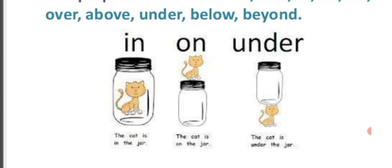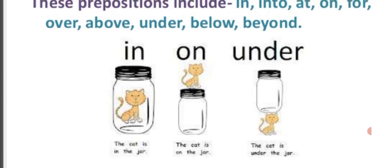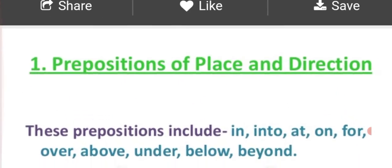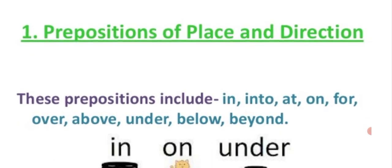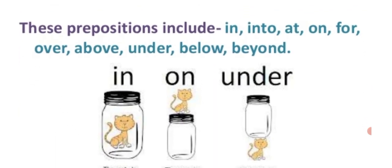We will use the preposition 'on' in the appropriate situation. For 'under': the cat is under the jar. This is how we use prepositions of place and direction. The full list is: in, into, at, on, for, over, above, under, below, beyond.